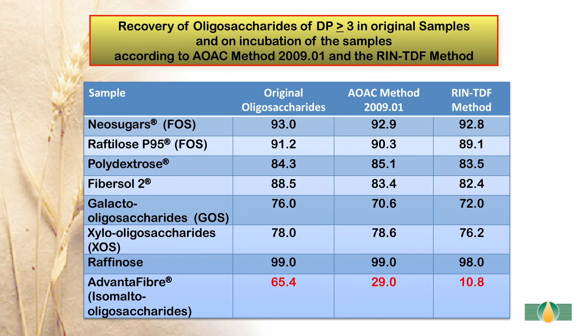Here we see the recovery of oligosaccharides of DP greater than or equal to 3 in the original samples and on incubation according to AOAC method 2009.01 and the rapid integrated TDF procedure. The amount of oligosaccharide measured is very similar in either method compared to the original for Neosugar, Raftilose, and Polydextrose. The one major difference is Advanta fibre isomaltooligosaccharides, which are clearly hydrolyzed under both AOAC method 2009.01 and even more so under the rapid integrated total dietary fibre method.